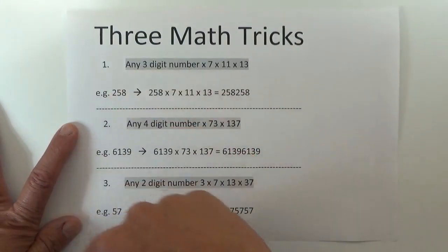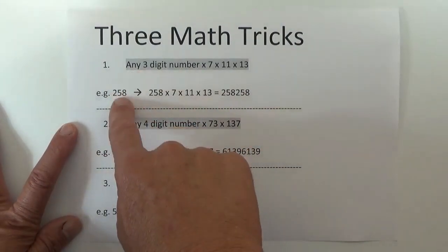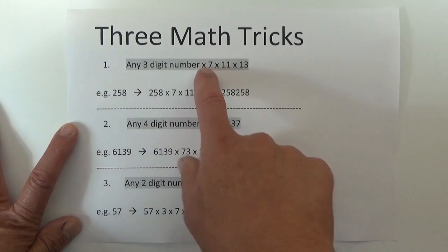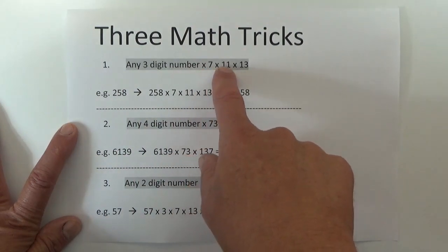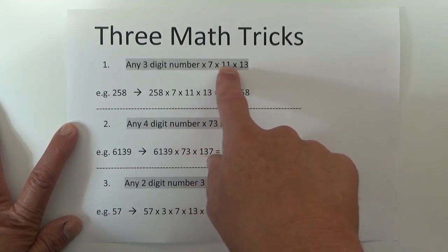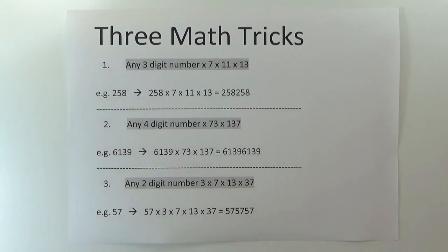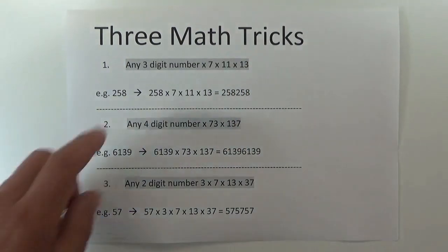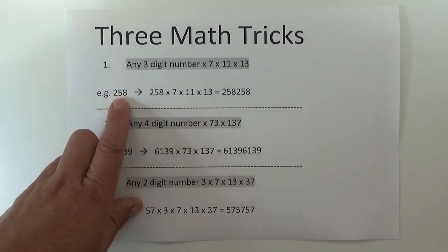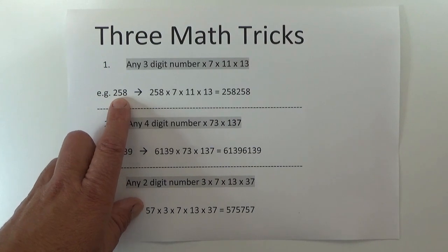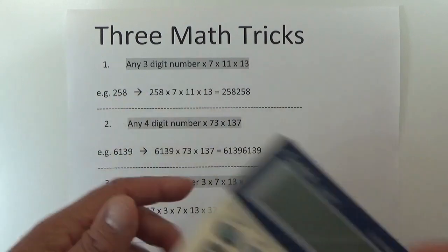So the first trick is where you take any three-digit number and you multiply it by 7, multiply it by 11, and then multiply it by 13. And in the example here I've started off with a number of 258.